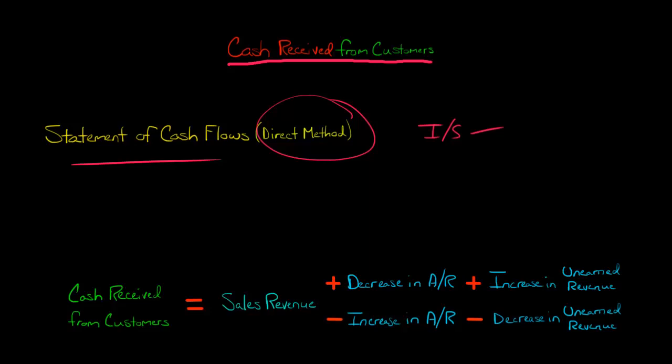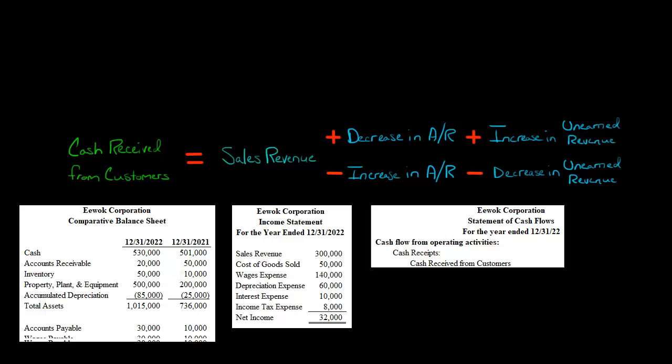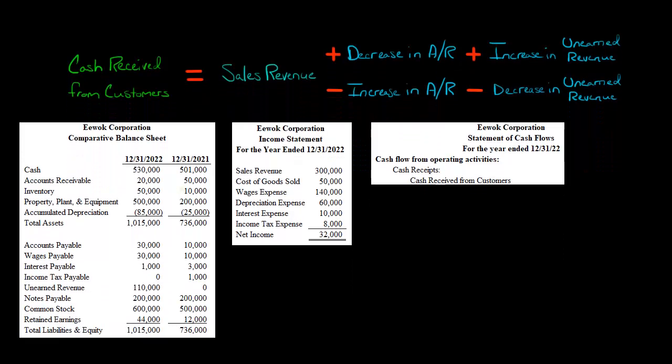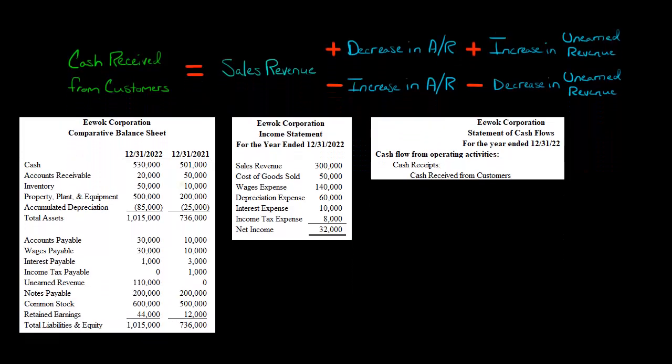Now that we've got that down, let's go with a sample problem that I made and we'll see if we can calculate cash received from customers. Here we've got the comparative balance sheet for a company, the income statement for the company, and then we want to figure out for the operating section of the statement of cash flows, we want to calculate cash received from customers. We have enough information here to do that.